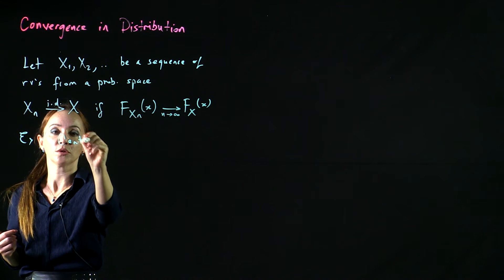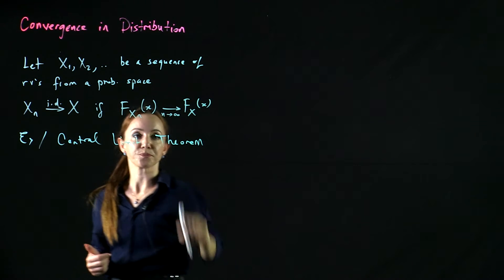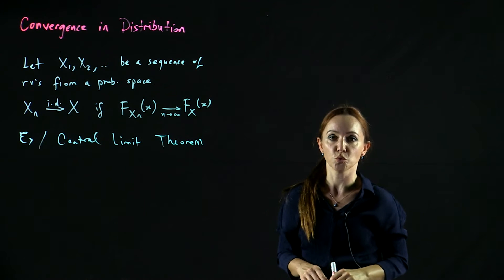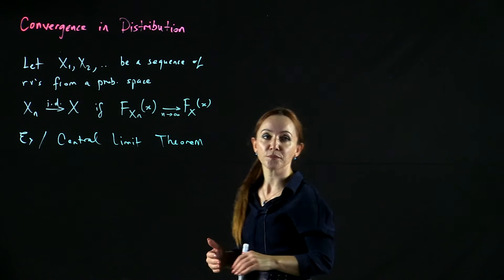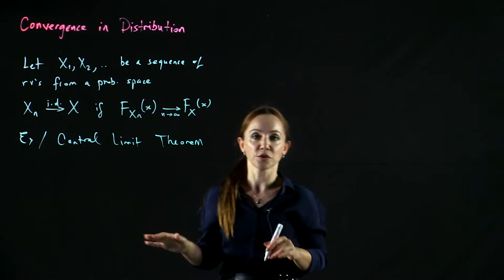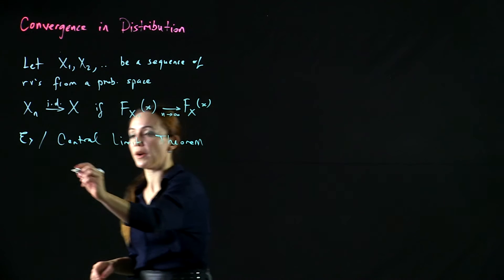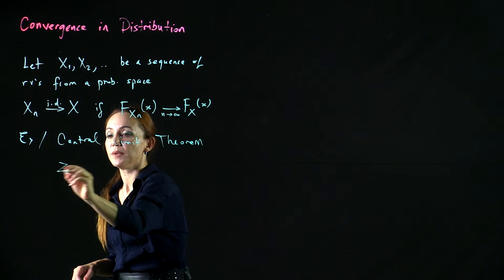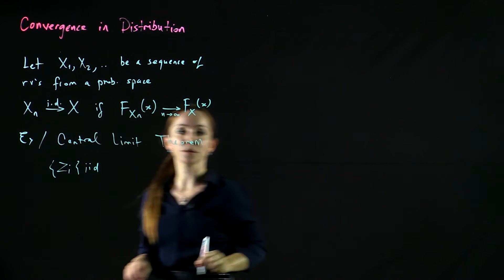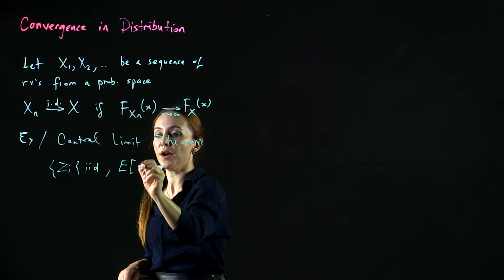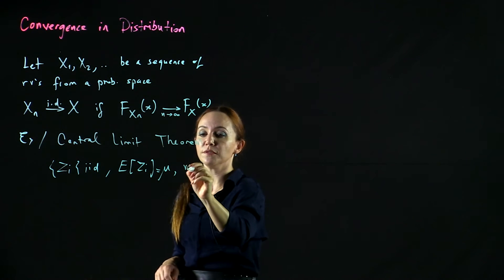A classic example of convergence in distribution is the central limit theorem, which is very common and widely used in engineering and other fields where probability is applied. The simplest version takes a sequence of iid random variables with finite expectation and finite variance.